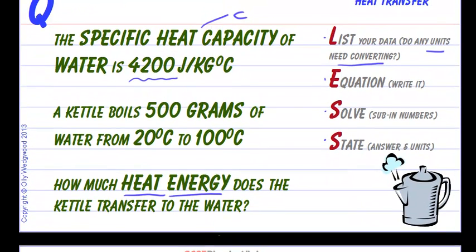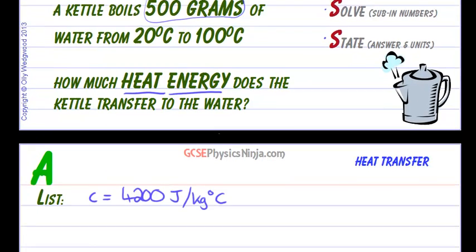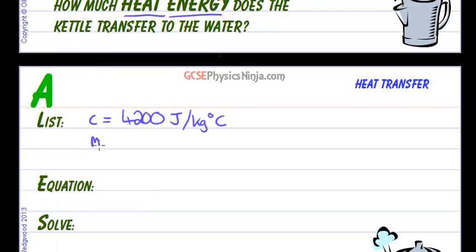What else do we know? We know that we've got 500 grams of water. Well that's mass, so let's write that down. So mass equals 500 grams of water.